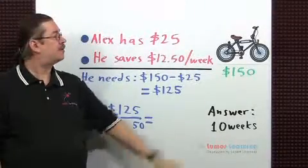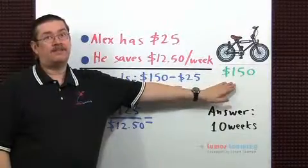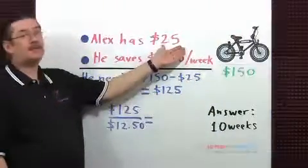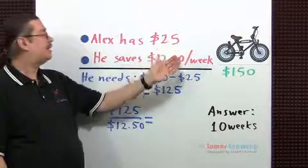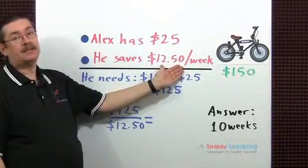Alex is saving up for a bicycle that costs $150. He already has $25 in his savings account. He's able to save $12.50 per week.